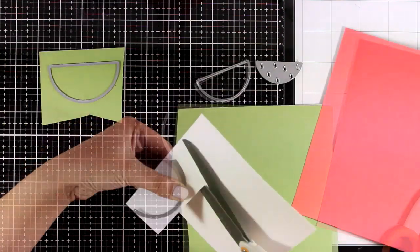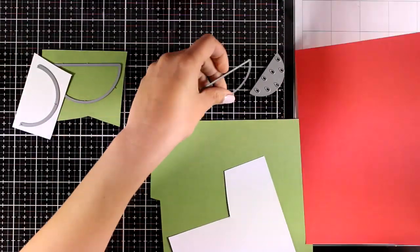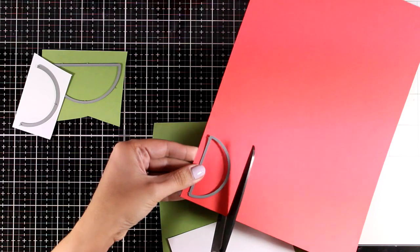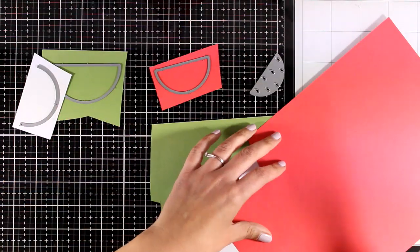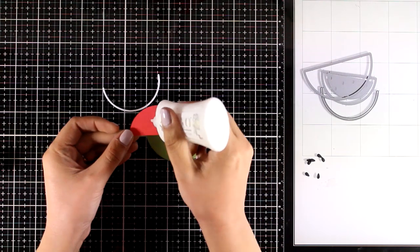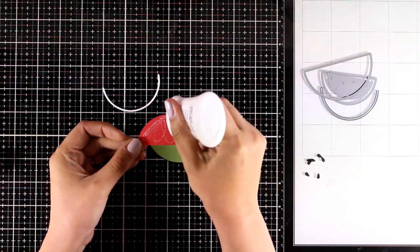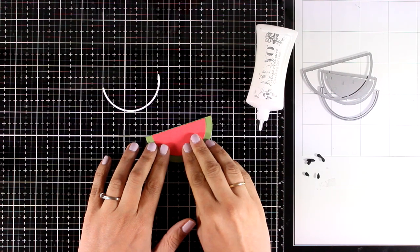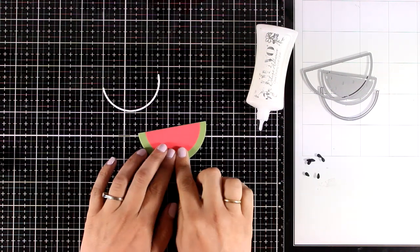I'm going to start with a watermelon, which is what these dies are supposed to create. I'm going to die cut out of colored cardstock. Of course, you can use white cardstock and color it in with your favorite mediums, alcohol markers, or blending tools.